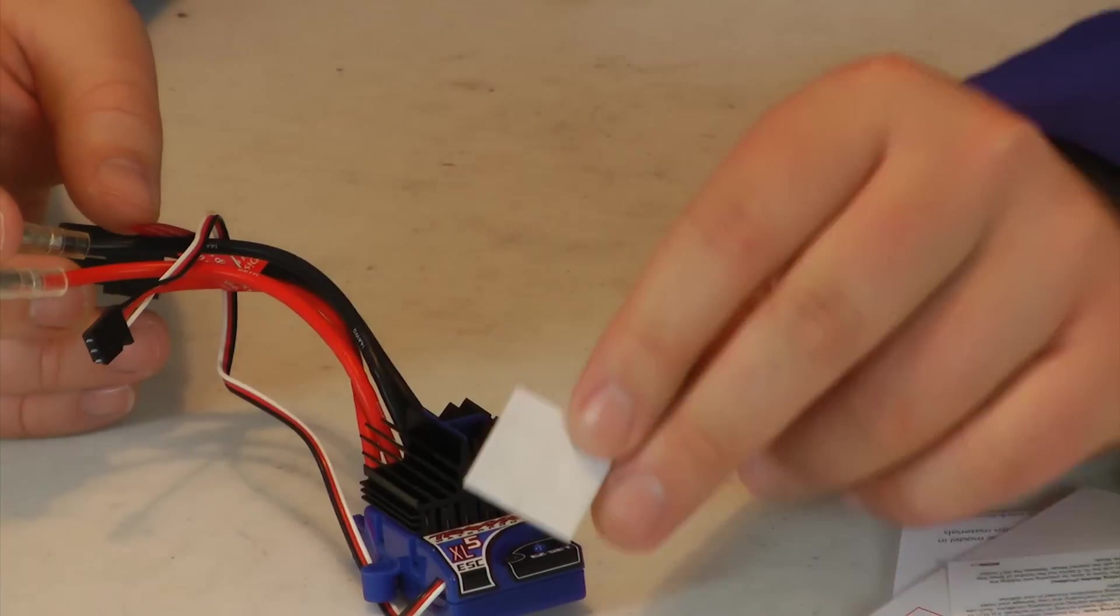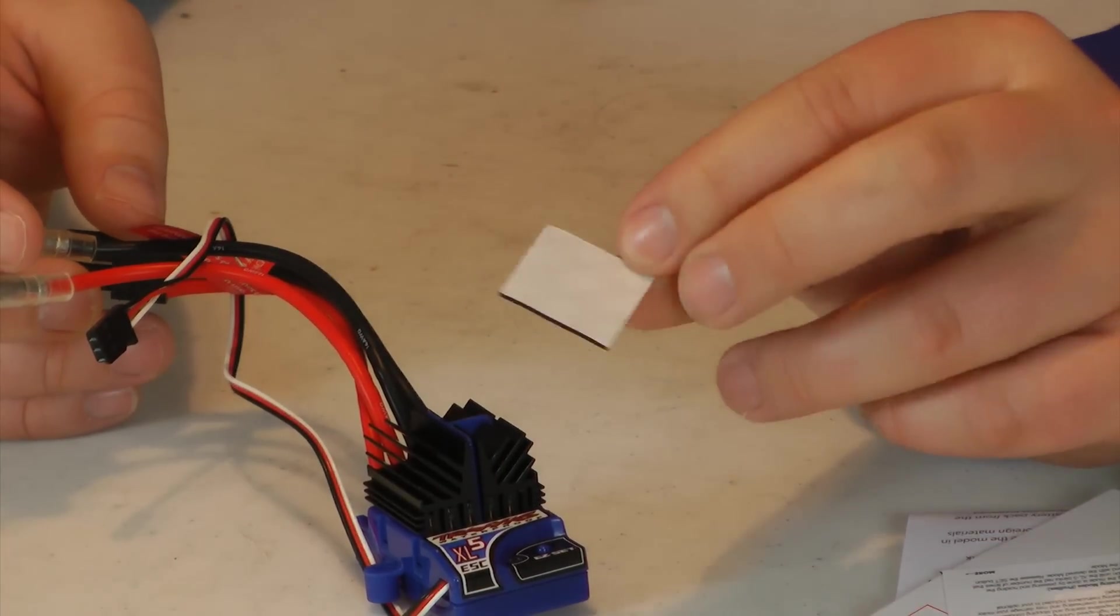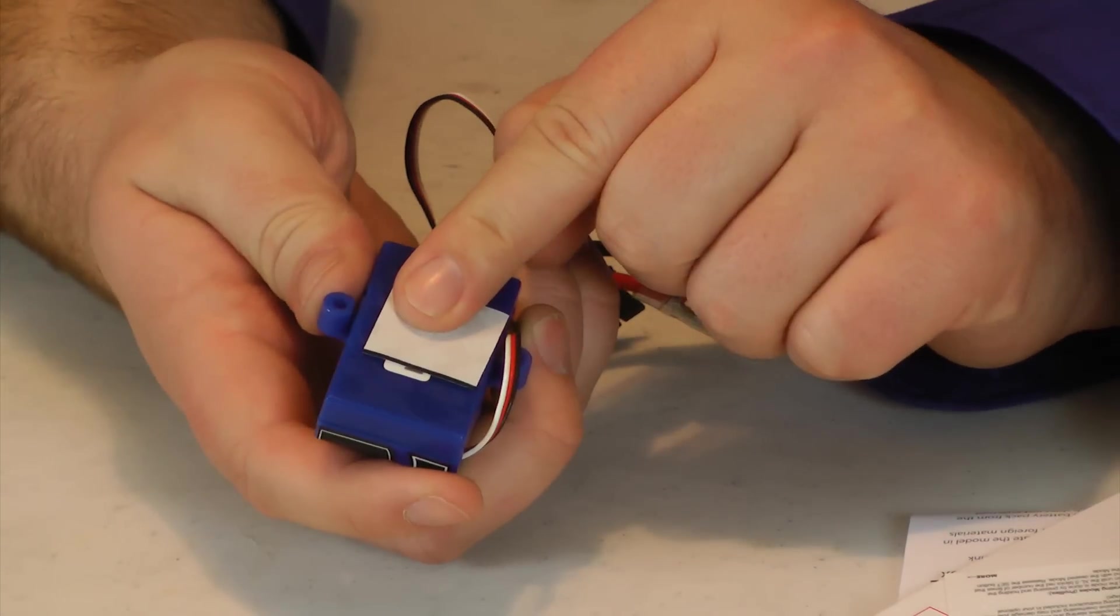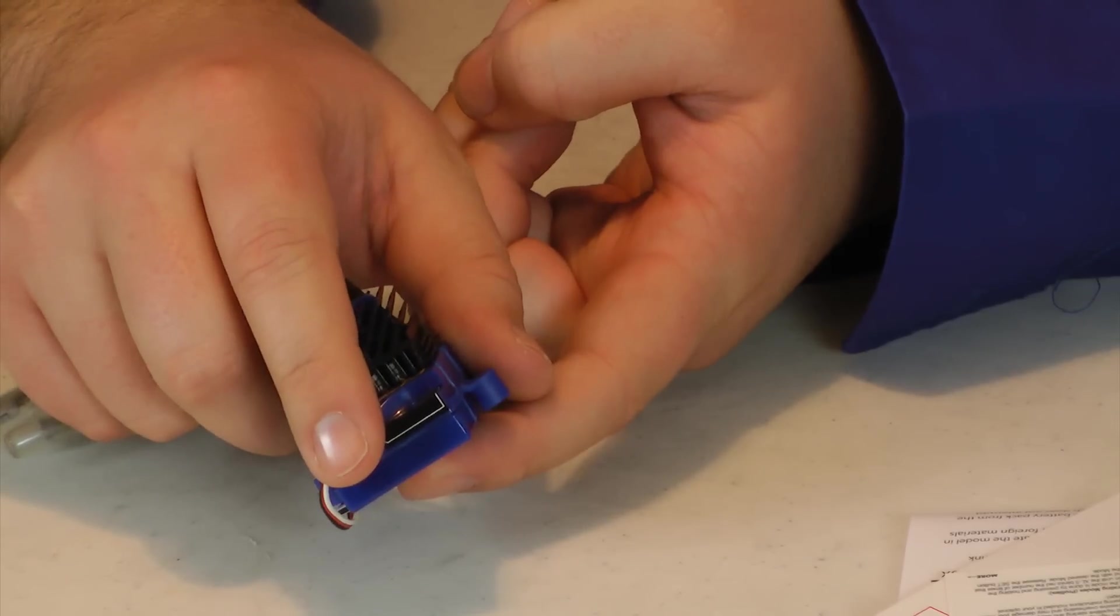Also what's included is, if you can see this, the little sticky pad that you put on the bottom of the ESC. And then that adheres to both the ESC and the vehicle you're putting it in, so it stays put.